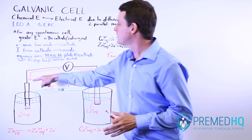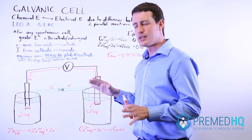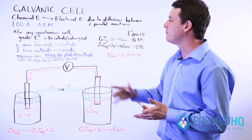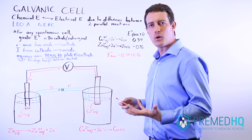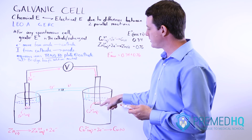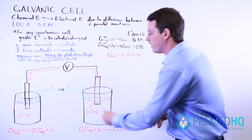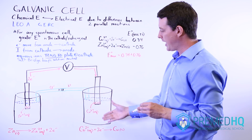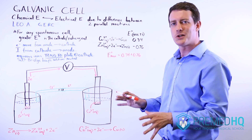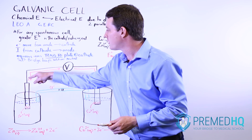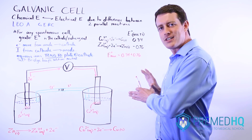The two electrons released travel from the anode across a wire — through a voltmeter in basic illustrations, or a resistor or other circuit element — and reach the cathode side. At the cathode, reduction occurs: the copper cation gains two electrons to produce solid copper. Electrons always move from the anode to the cathode.